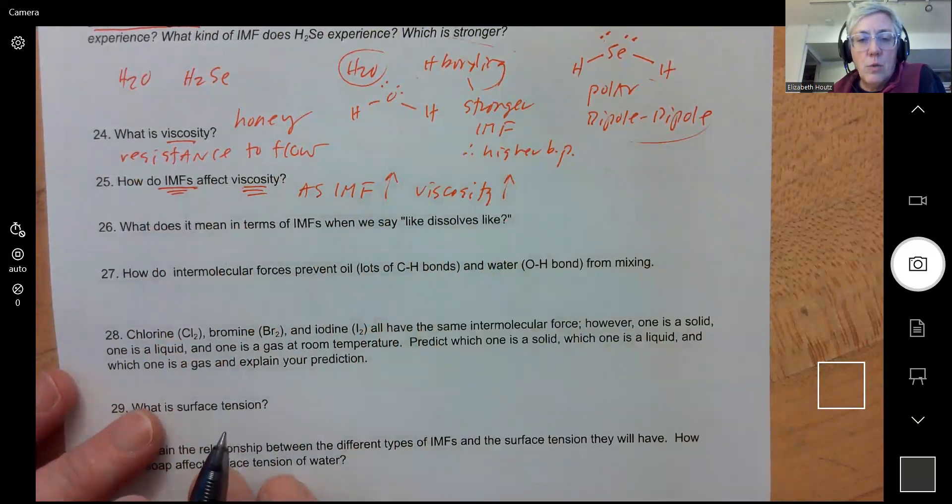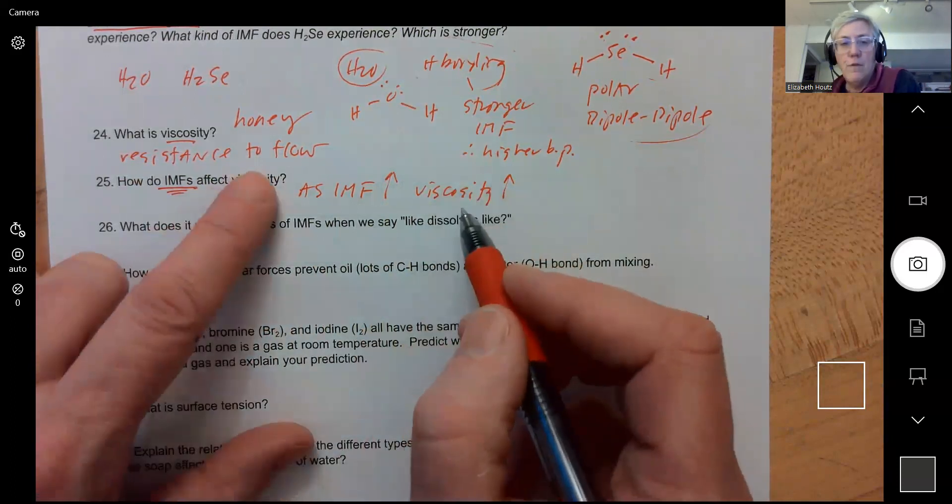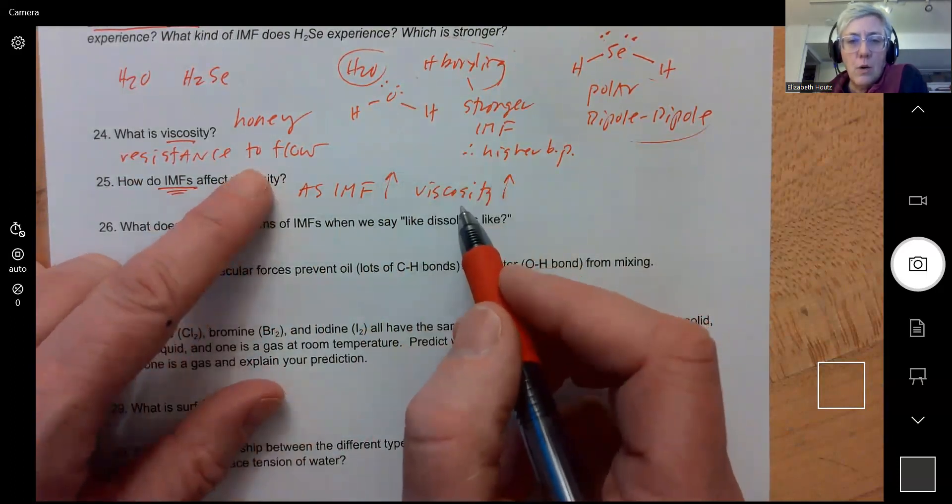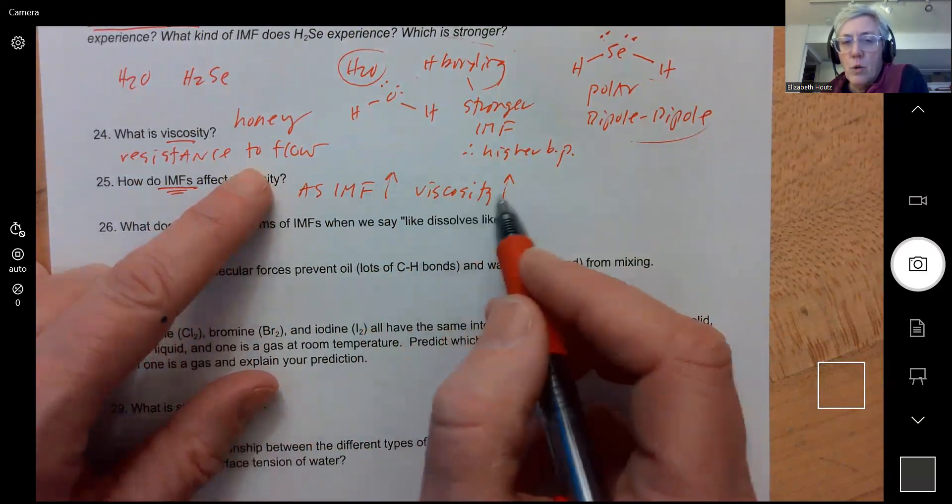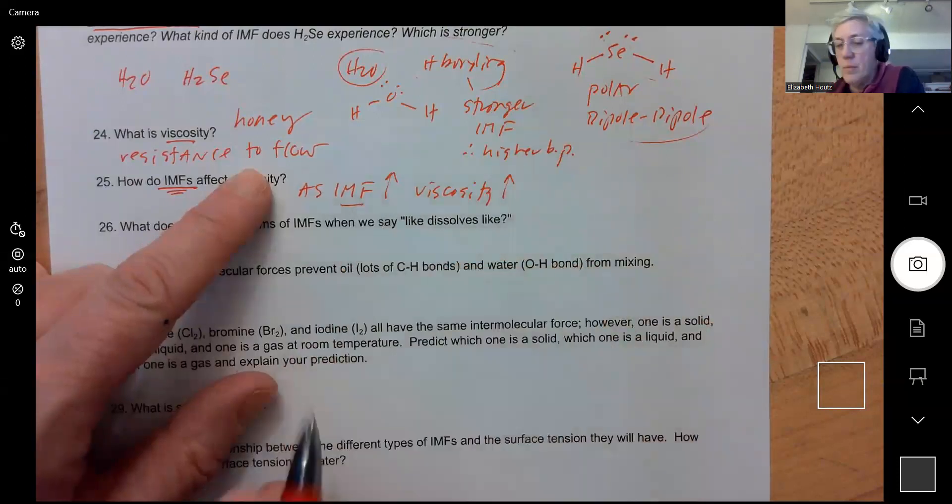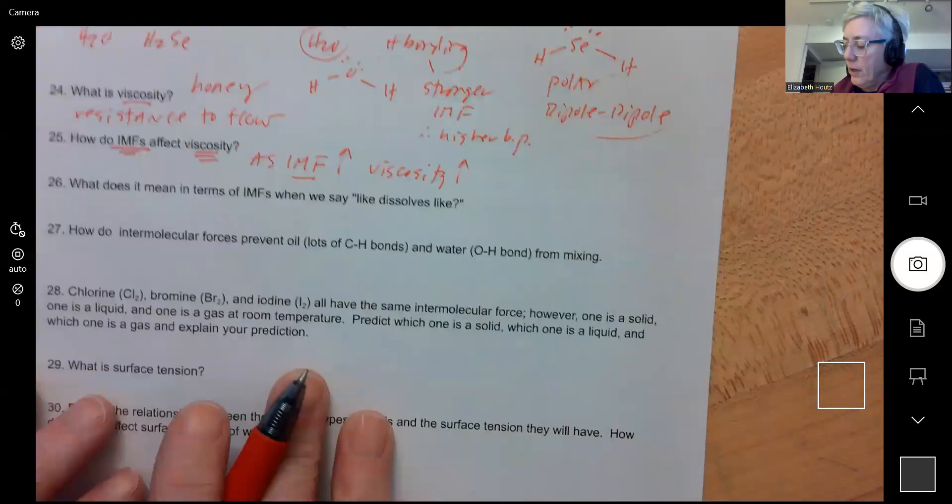Things hold on to each other more tightly and then they don't want to flow. You try to pour honey across the counter, it's going to move pretty slowly because those molecules are holding on together very tightly because they have strong intermolecular forces.